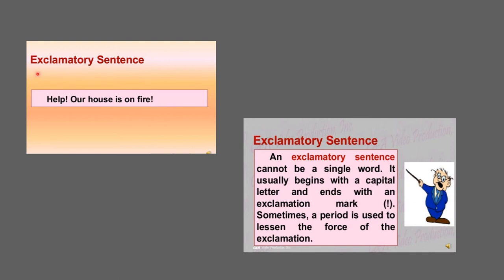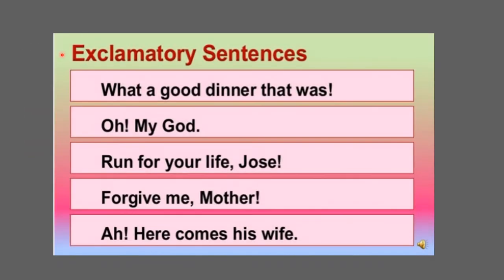Exclamatory sentences express a sudden feeling or emotion — happiness, anger, fear, etc. Some more examples: 'What a good dinner that was!' 'Oh! My God. Run for your life, Josh!' 'Forgive me, mother!' 'Ah, here comes his wife.' These are all examples of exclamatory sentences.